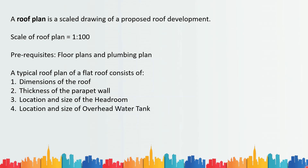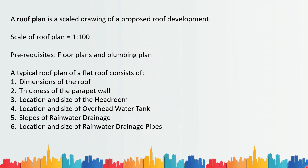The location and size of the headroom has to be shown in the roof plan. Fourth is the location and size of the overhead water tank, which is usually above the headroom — maybe the same size, a reduced size, or a different shape. Fifth is the slopes of rainwater drainage. Sixth is the location and sizes of rainwater drainage pipes. Seventh is the location and size of the vent pipes.